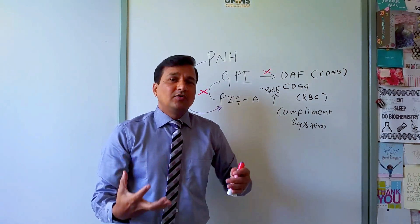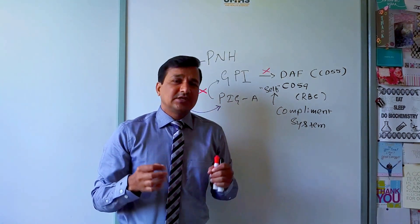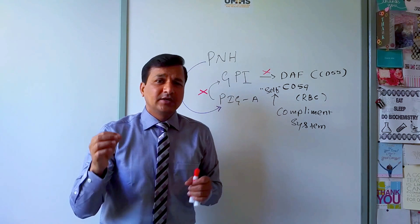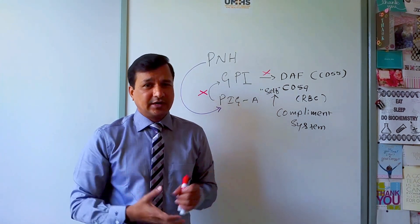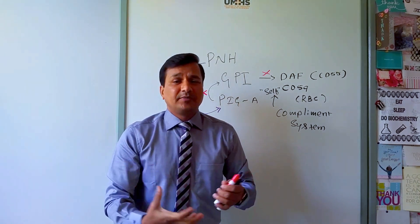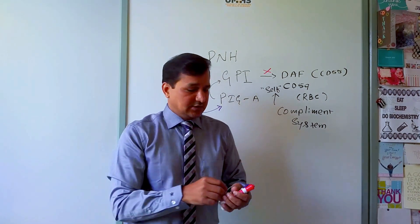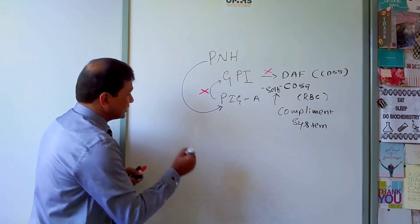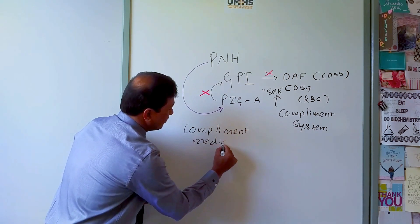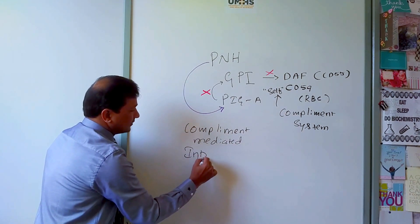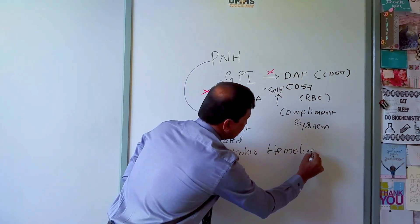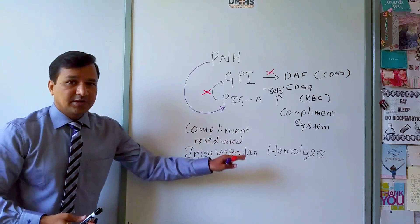PNH is a very rare clonal hematopoietic stem cell disorder, seen in approximately 1 in 1 million people in the United States. Due to the absence of DAF and CD59, red blood cells are hemolyzed through complement-mediated intravascular hemolysis.